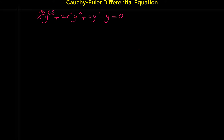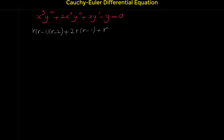How can we solve this third order Cauchy-Euler? Similar to second order, we write the characteristic equation. For x³y''', put r(r-1)(r-2). If you had x²y'', put r(r-1), and because we have coefficient 2 here, we put 2 in front. For xy' we put r, and for y we put the coefficient, which is negative 1, equals 0. This is the characteristic equation.